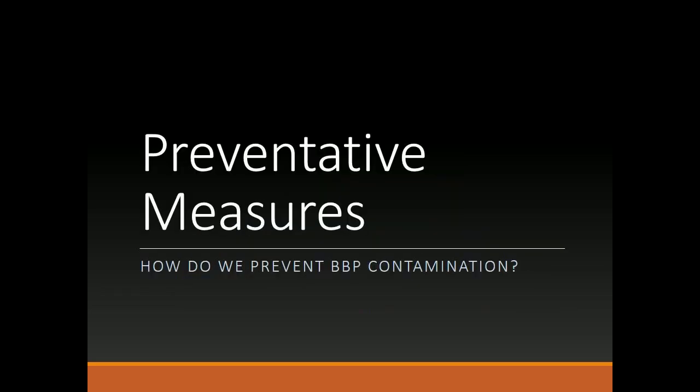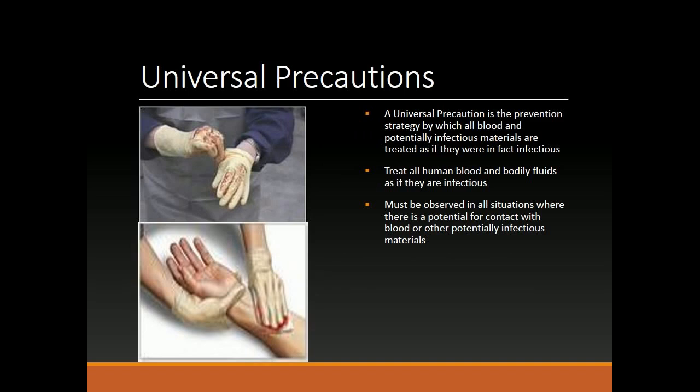Preventive Measures — how do we prevent BBP contamination? Universal Precautions. A universal precaution is the prevention strategy by which all blood and potentially infectious materials are treated as if they were in fact infectious. Treat all human blood and bodily fluids as if they are infectious. Universal precautions must be observed in all situations where there is a potential for contact with blood or other potentially infectious materials.